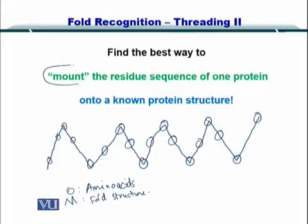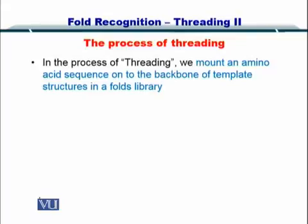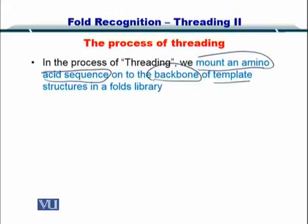You have mounted the amino acid sequences onto the fold structure — this is the fold from SCOP. You can do this for multiple folds and find that fold which best matches your sequence. Simply put, the process of threading is the mounting of an amino acid sequence onto the backbone of a template fold.